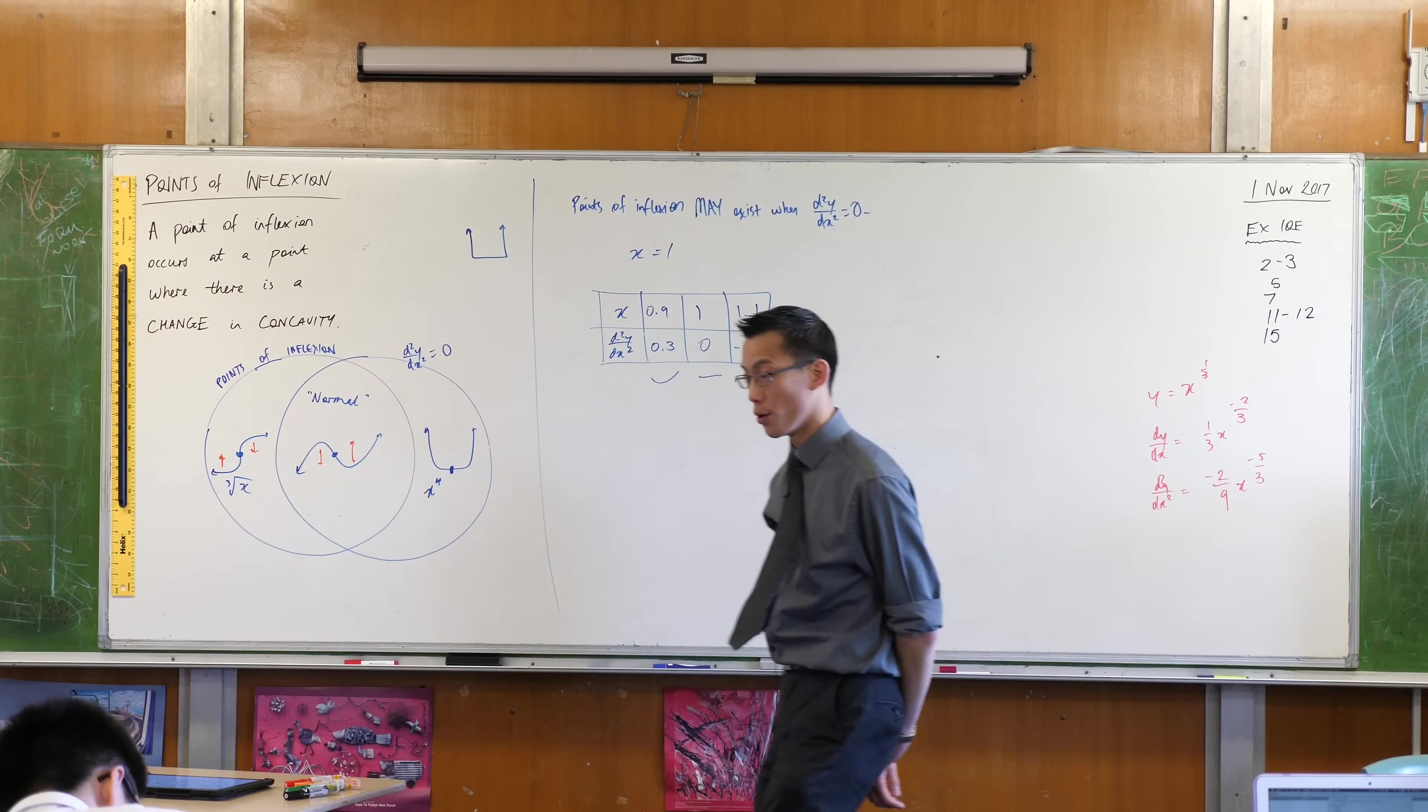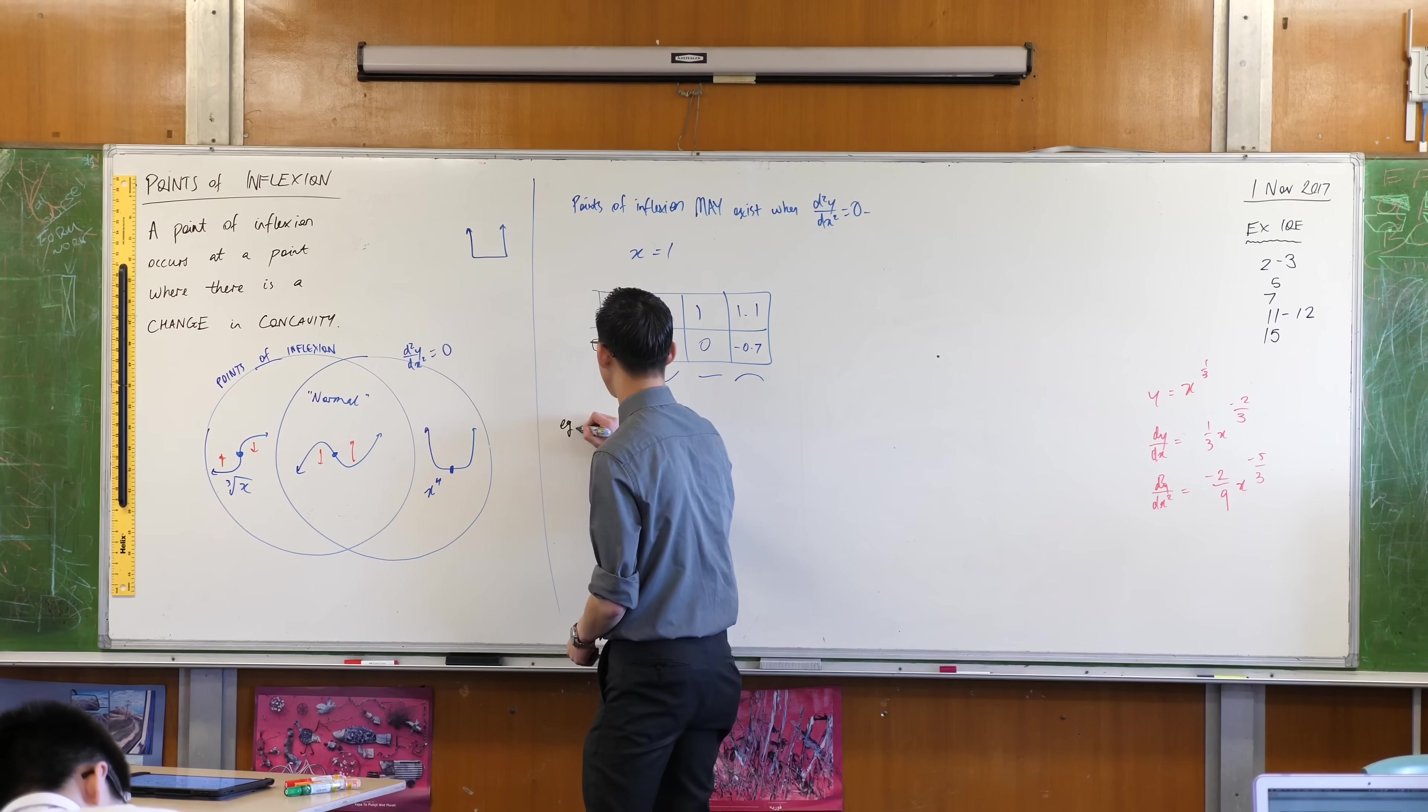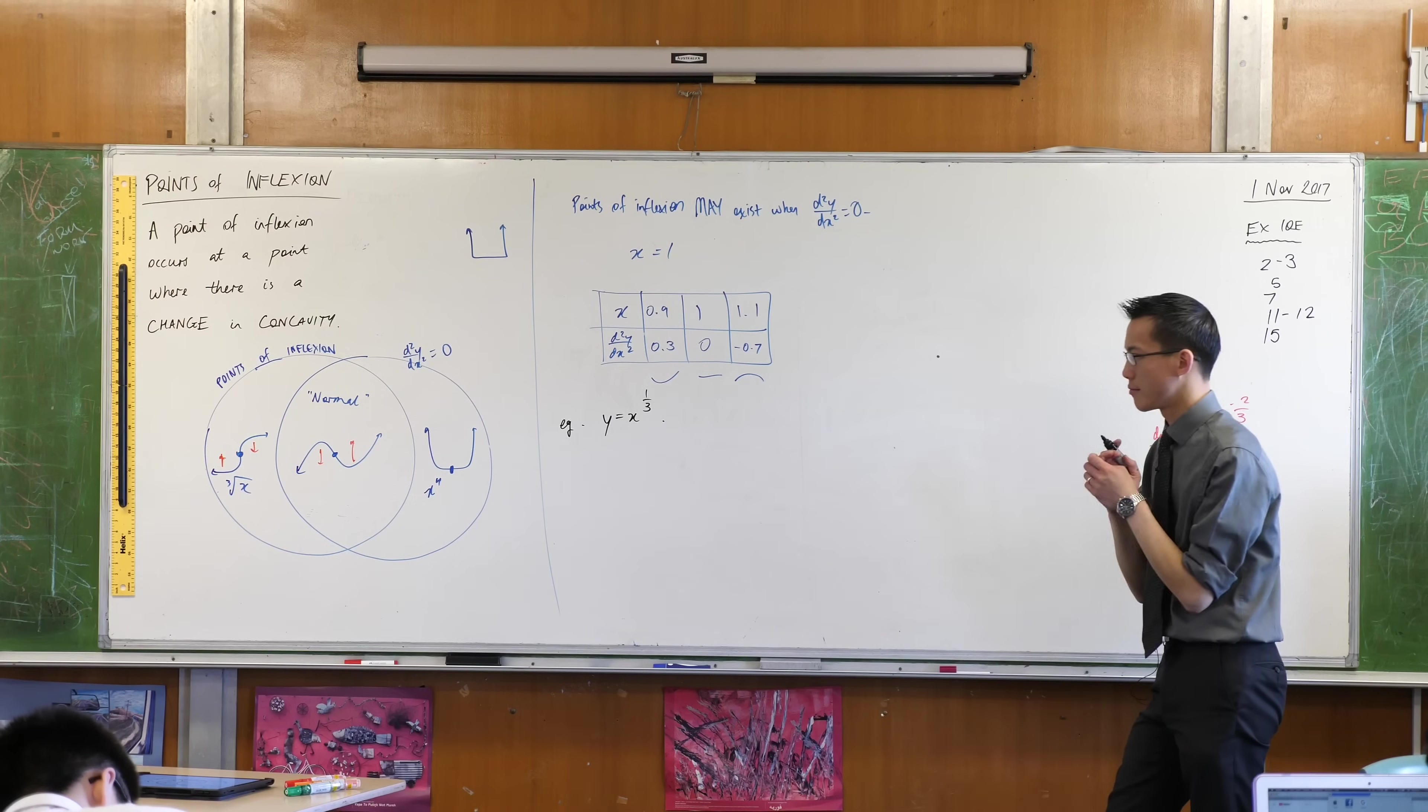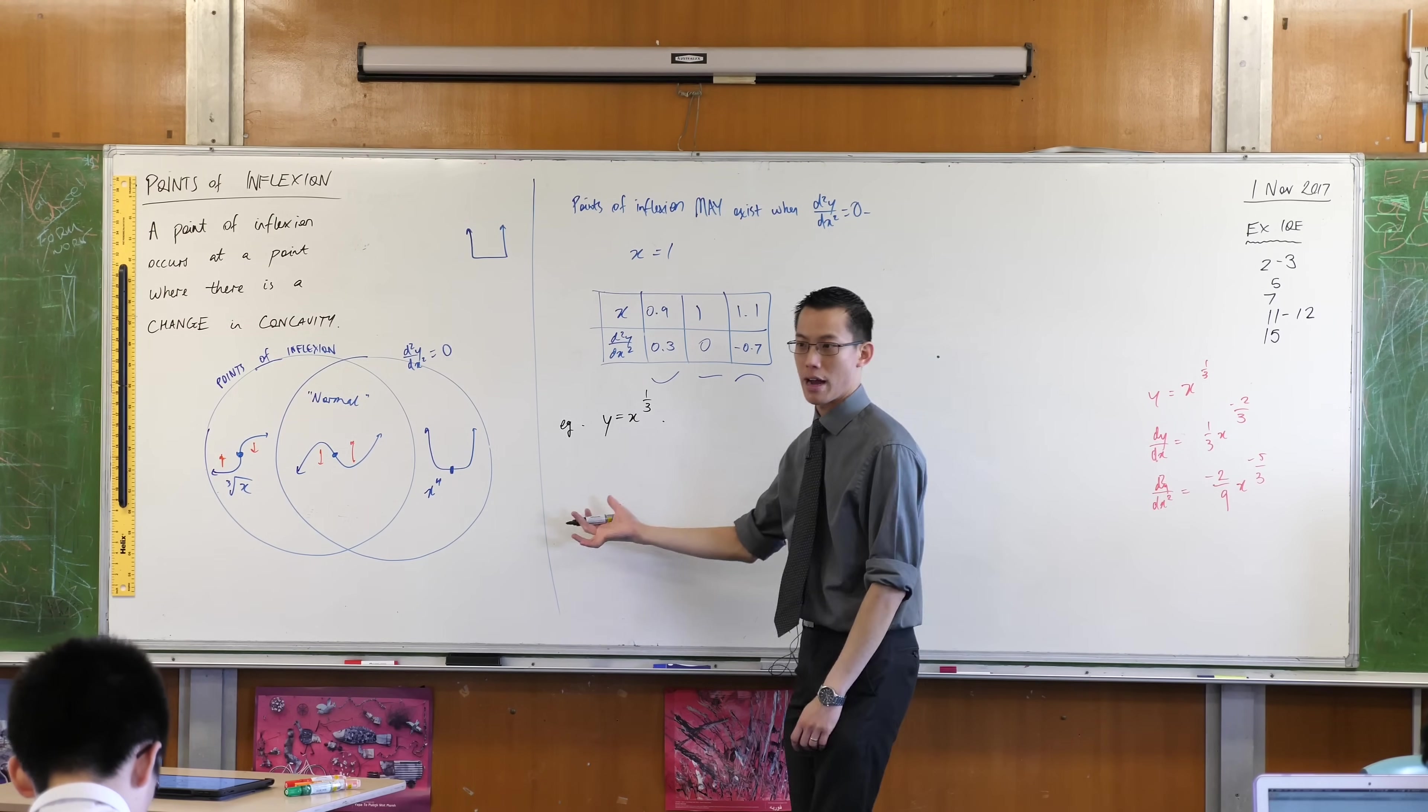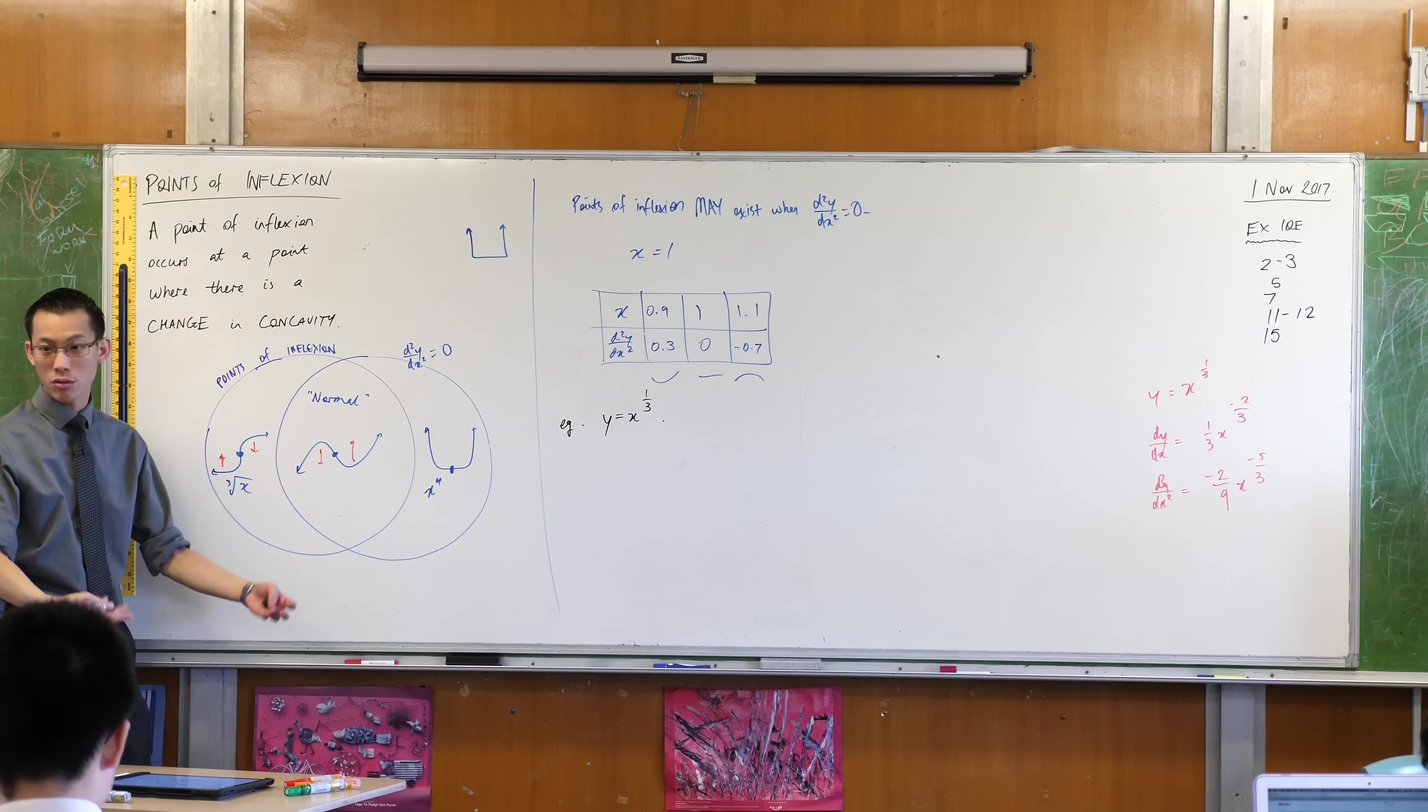So if for example, well not for example, let's do it like this. If the question were just as straight as possible, find the points of inflection of this graph. And suppose you hadn't heard my example before, you don't know that you're guaranteed to find your point of inflection. Here's what you would do.